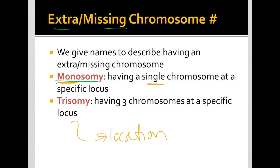The other, more common one that we will see is a trisomy, using that prefix tri, meaning three, which means you have three chromosomes at a specific location. So a monosomy is minus one and a trisomy is plus one, because remember you already have a homologous pair, so to have an extra would mean you have three.